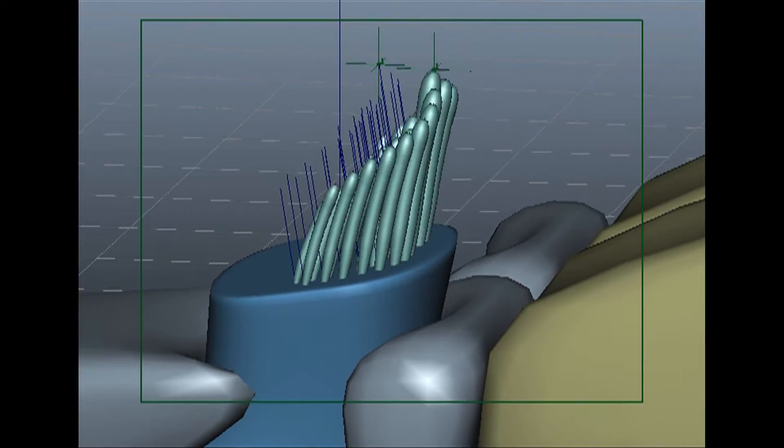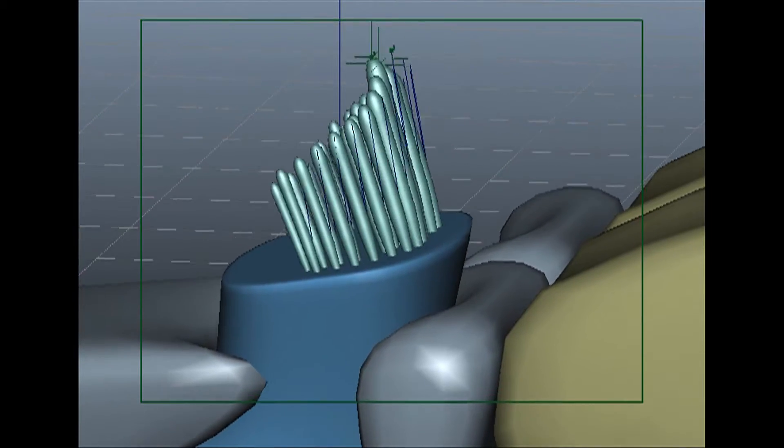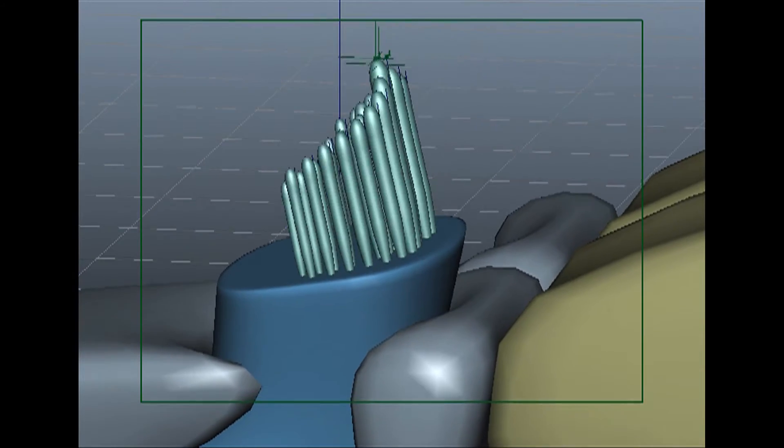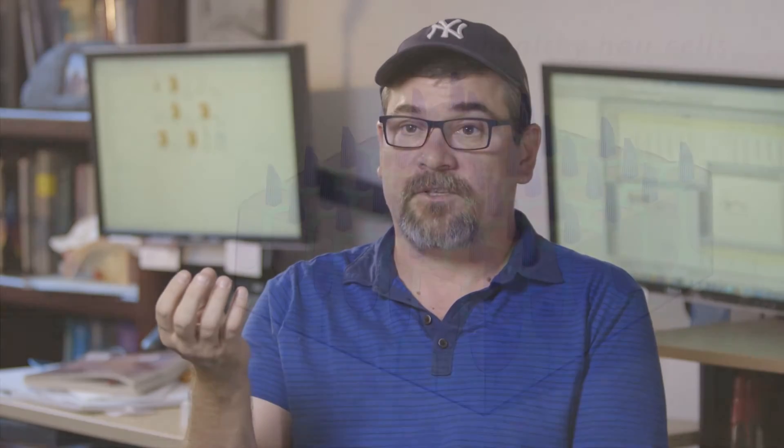They're called hair cells because they have these little cilia that stick out the top. And when sound comes in, they vibrate. When they vibrate, this opens a mechanically gated channel. Aminoglycosides had been commonly used in studying the biophysics of the channel because they block the channel.